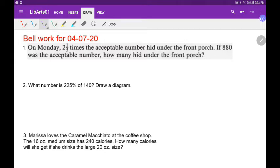The Bellwork for April 7th. On Monday, 2 1/5 times the acceptable number hid under the front porch. If 880 was the acceptable number, how many hid under the front porch?